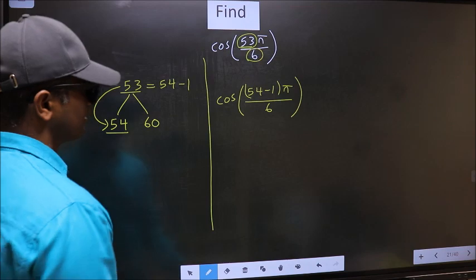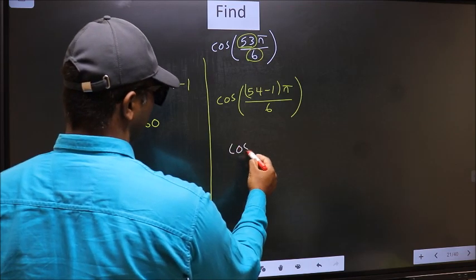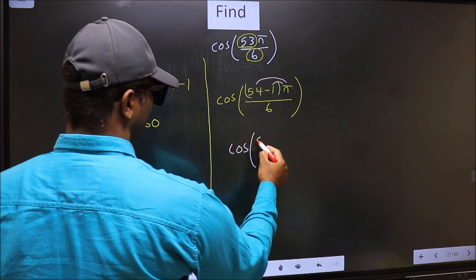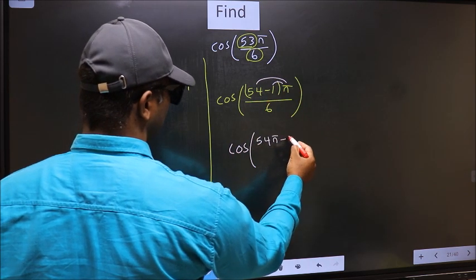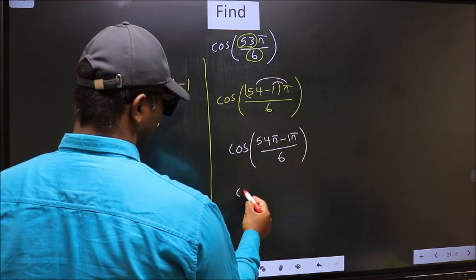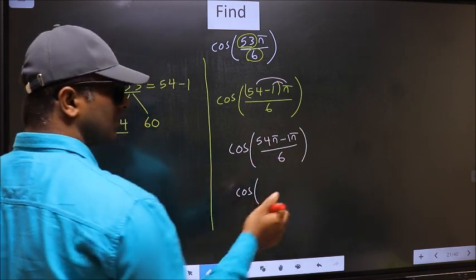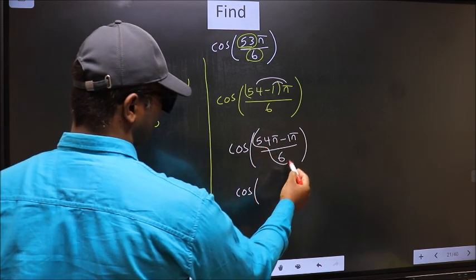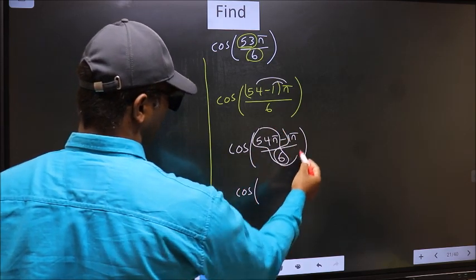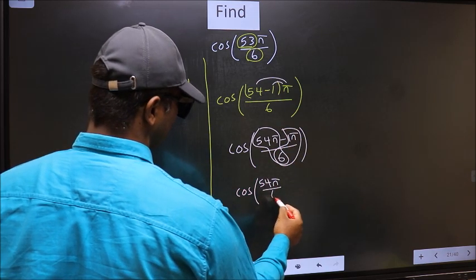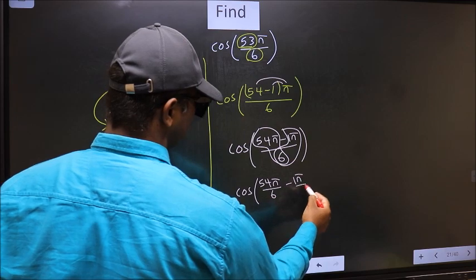Next, you should open up the brackets. We get cos of (54π minus 1π)/6. Now, split the denominator in this way: 54π/6 minus 1π/6.